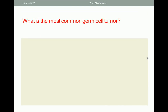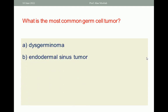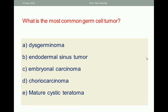What is the most common germ cell tumor? A. Dysgerminoma; B. Endodermal sinus tumor; C. Embryonal carcinoma; D. Choriocarcinoma; E. Mature cystic teratoma. The one best response is mature cystic teratoma, because we are talking about any germ cell tumor, whether benign or malignant — mature cystic teratoma is the commonest.